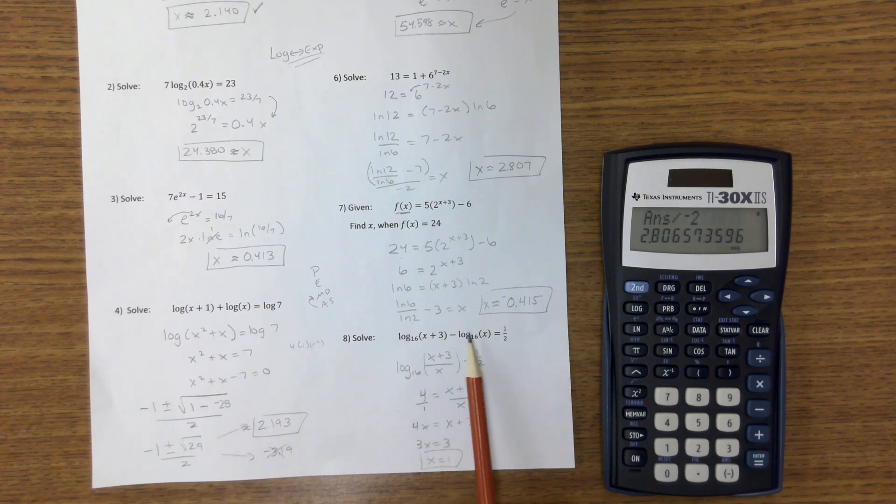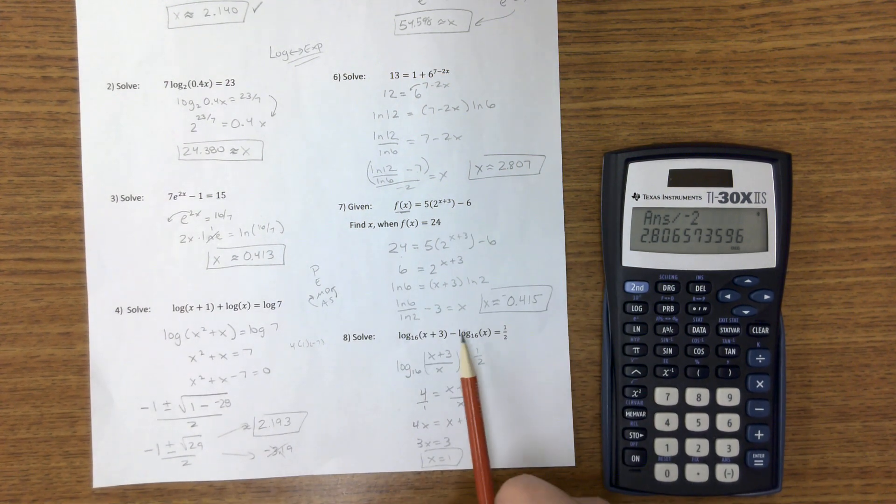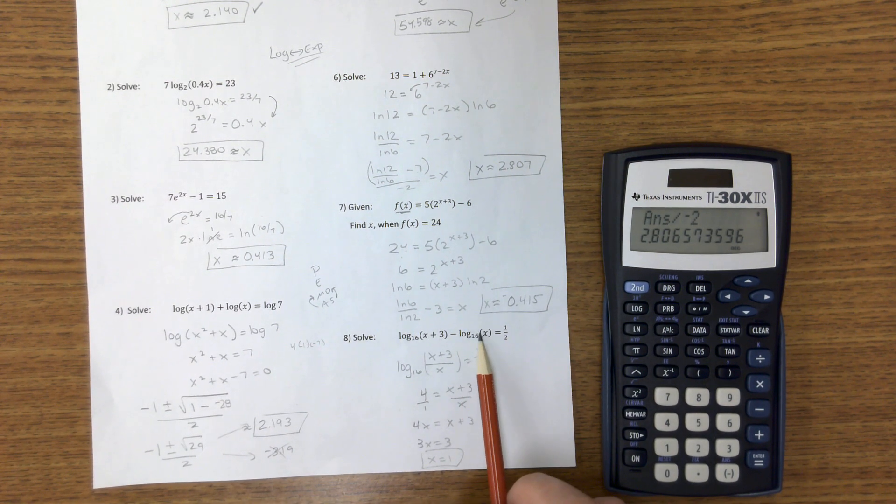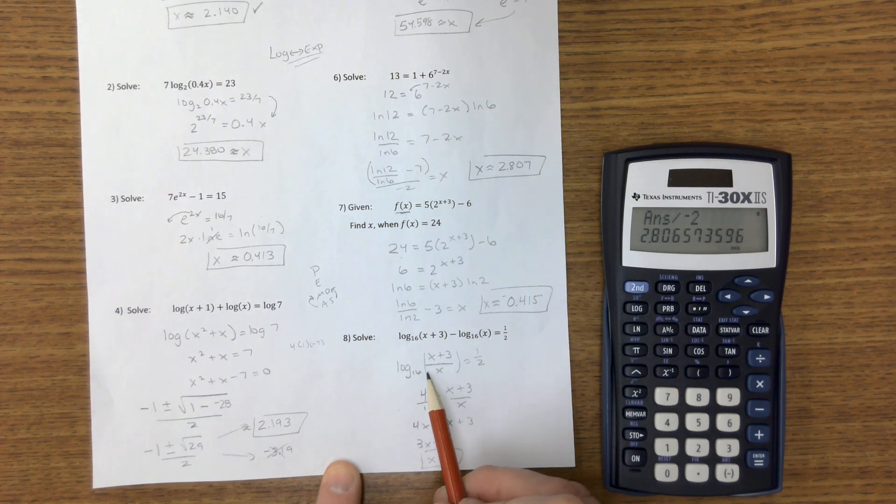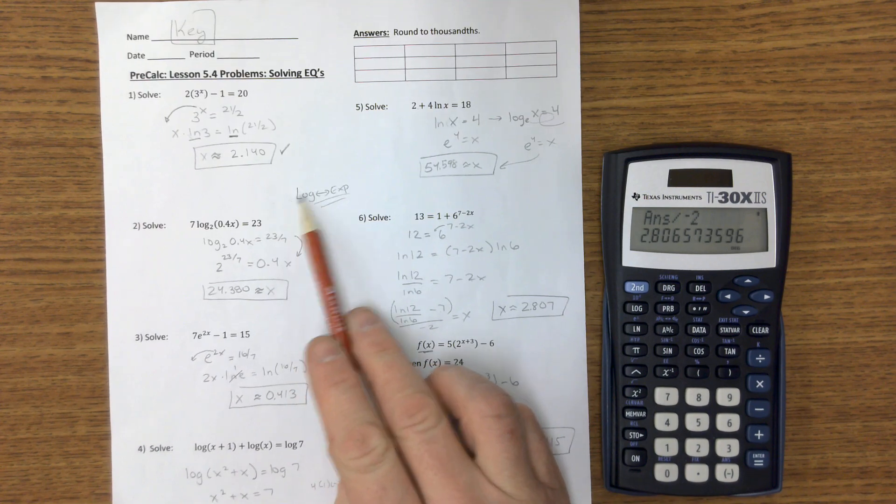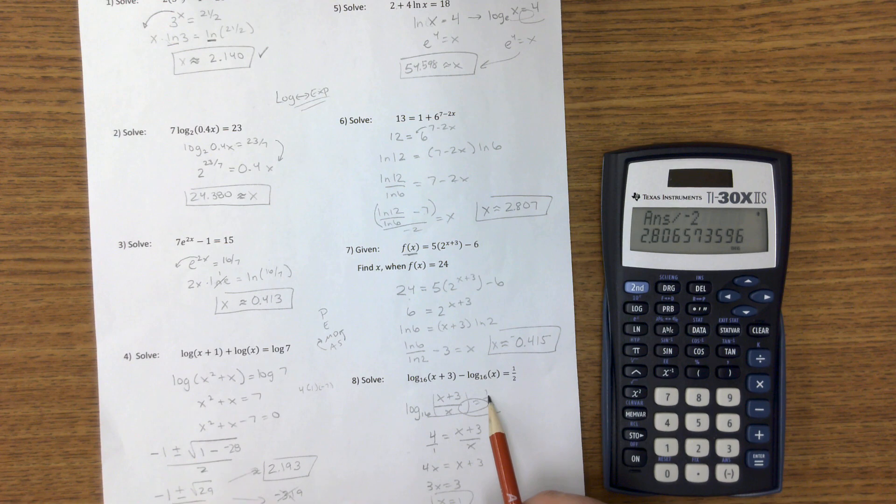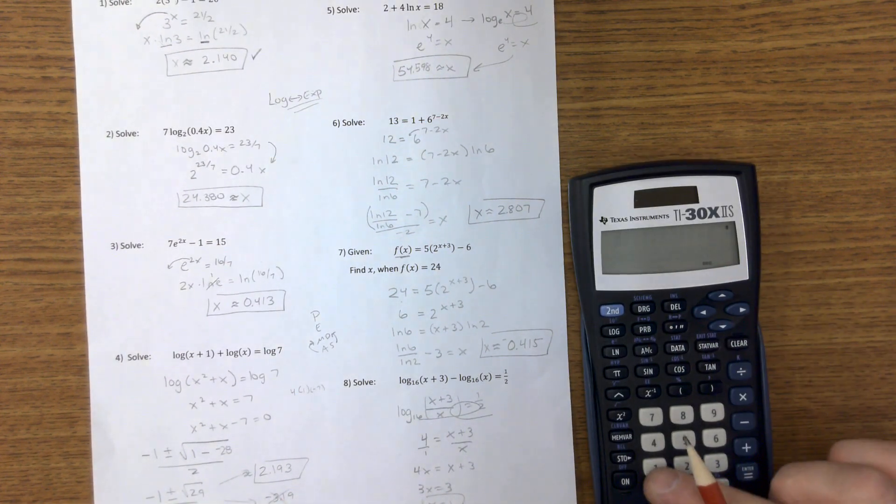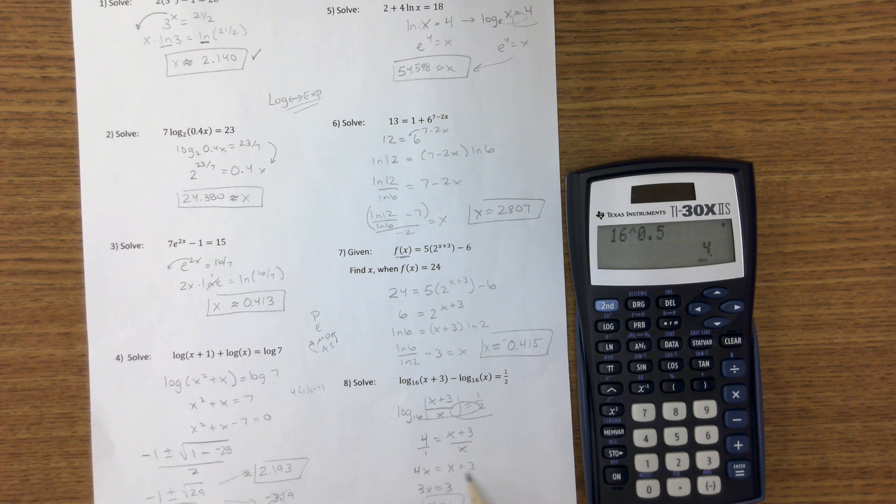Next one right here. If we have two logs, I can combine them because I know division and subtraction go together. So this subtraction in the world of logs, if I put them together, it's a single division problem. And then I can change this log expression, just like we did up here. This log expression goes to an exponential. 16 to the 1 half is this, 16 to the 1 half power. If you don't remember that, you can always check on your calculator. 16 to the 1 half power is a square root. So we square root it, and then we have this. We can cross multiply. 4x equals this, subtract the x, and x is equal to 1.